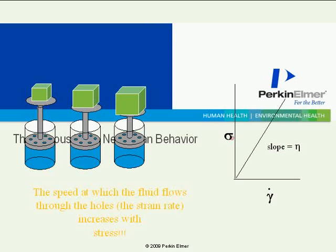So if you plot stress versus strain rate — and rate is indicated here by the old notation of a little dot above it, I could have just used D strain DT — you get a line where the slope now is viscosity. And this is what we would do when we're testing an oil with a capillary tube or when we were testing something with a Brookfield spinning disc rheometer. This is the kind of number we would be getting.